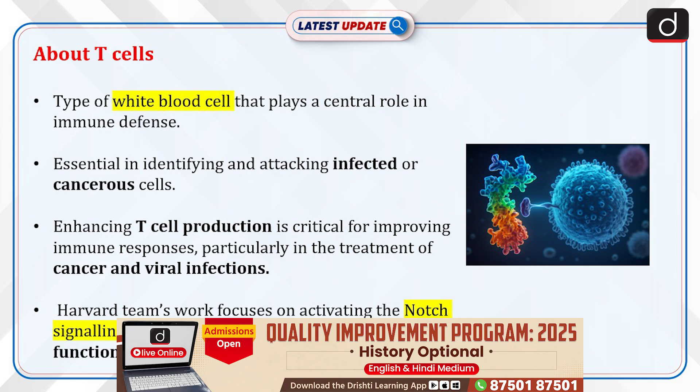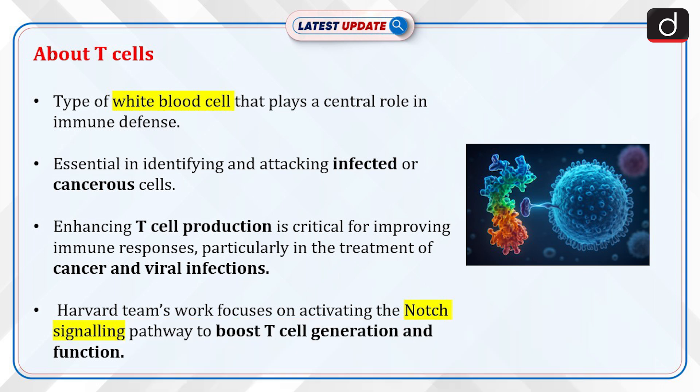Let's discuss T-cells. T-cells are a type of white blood cell that plays a central role in immune defense. They are essential in identifying and attacking infected or cancerous cells. Enhancing T-cell production is critical for improving immune responses, particularly in the treatment of cancer and viral infections. The Harvard team's work focuses on activating the notch signaling pathway to boost T-cell generation and function.